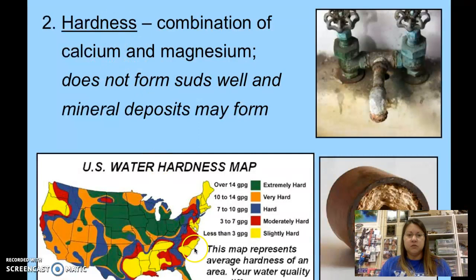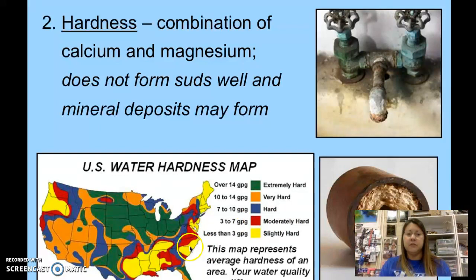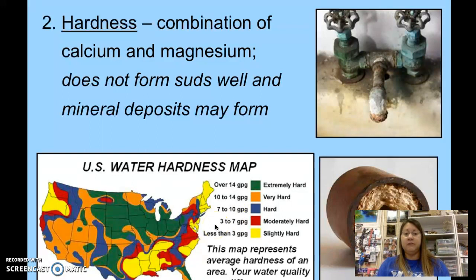When groundwater is used for drinking water, it may have an accumulation of those minerals. Looking at this map of North Carolina, based on topography we have a couple different zones of water hardness. In the Piedmont where we are, it's red — moderately hard. The coastal plain area is yellow — slightly hard, the lowest on the scale. The blue area in the mountains is hard water.